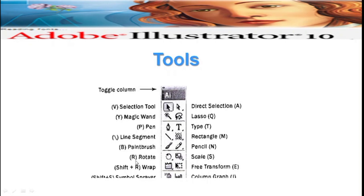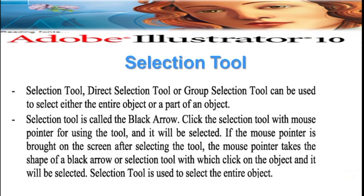Path tools: when we open Adobe Illustrator, the left side shows the tools bar with lots of tools available. First, we know the selection tools. The selection tool, direct selection tool, or group tool can be used to select either the entire object or a part of an object. The selection tool is called the black arrow — after selecting the tool, the mouse pointer takes the shape of a black arrow, and clicking on an object will select it.